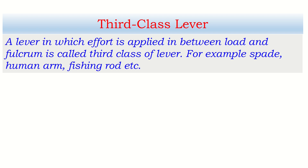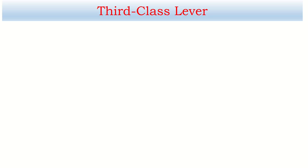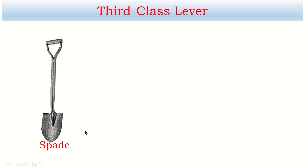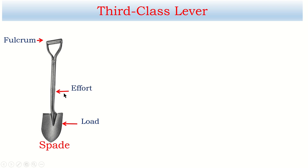Examples of third class levers include a spade, human arm, and fishing rod. Looking at the diagram of a spade: the load is at the position where we place sand or soil, one hand holds the top end as the fulcrum, and we apply force at the middle part.